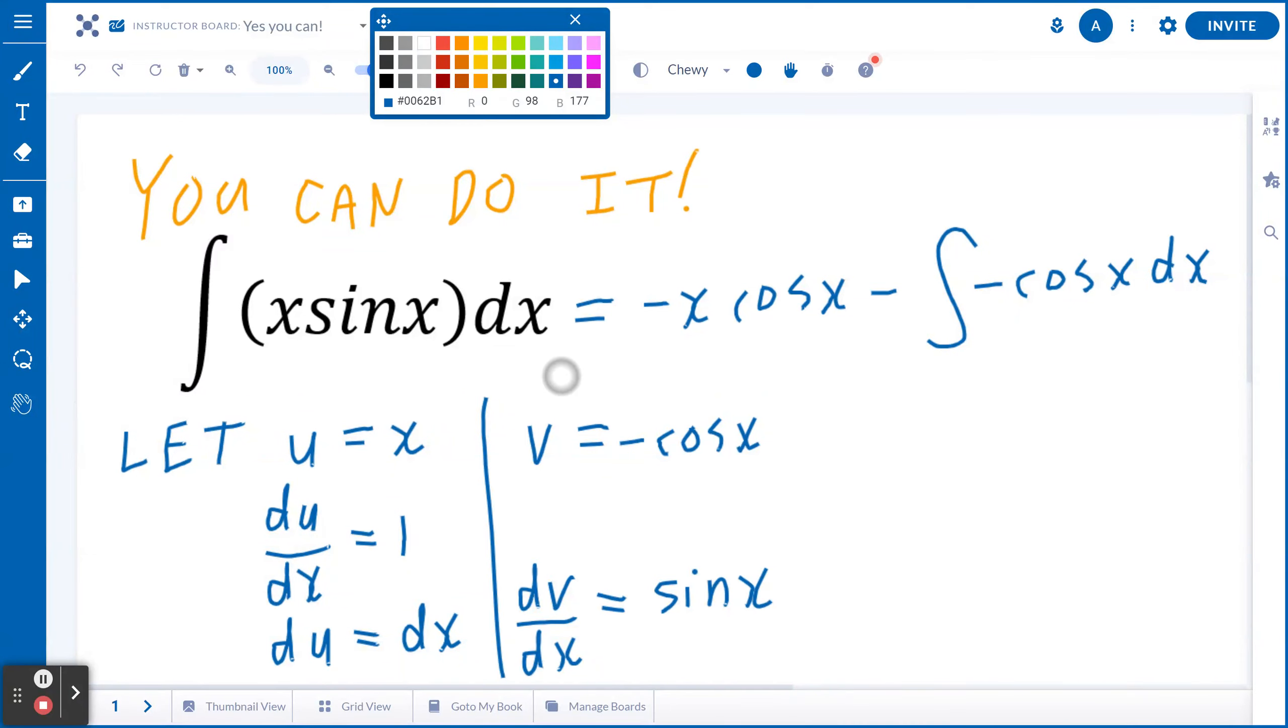Now let's separate this. Let's draw a line here, just like that. So now this equals to negative x cosine x.